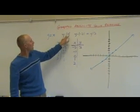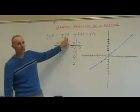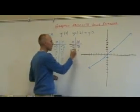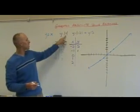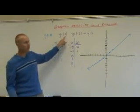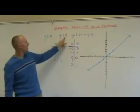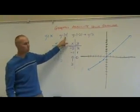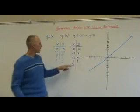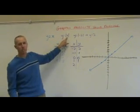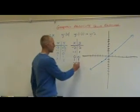And if x equals negative 1, the absolute value of negative 1 is positive 1. And if x is 0, the absolute value of 0 is 0. If x is 1, the absolute value of 1 is 1. And if x is 2, the absolute value of 2 is 2.